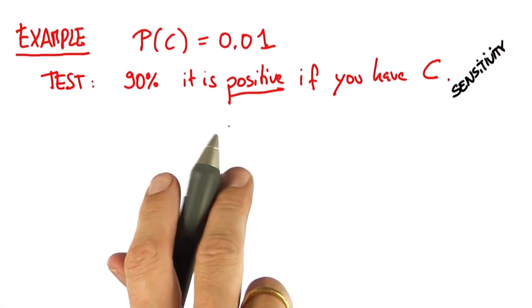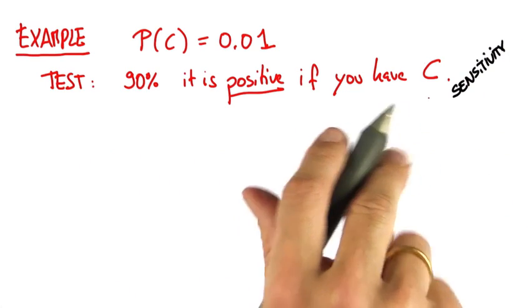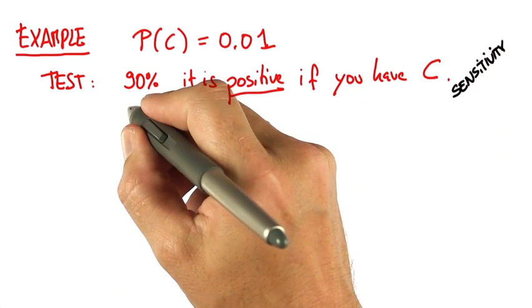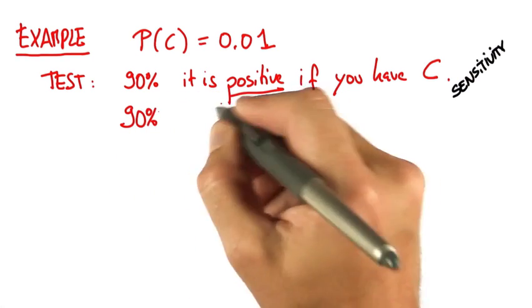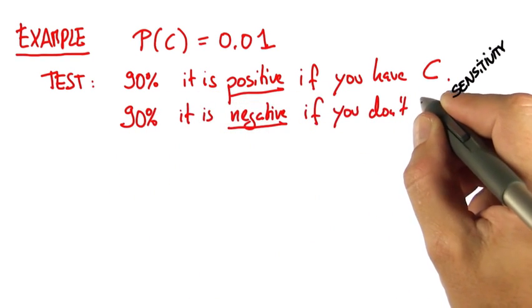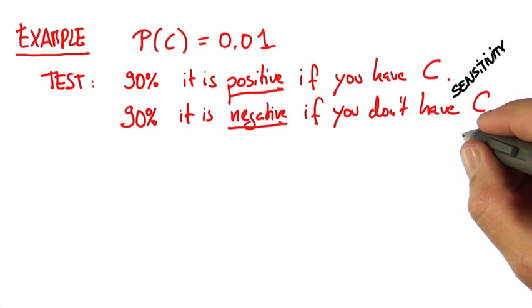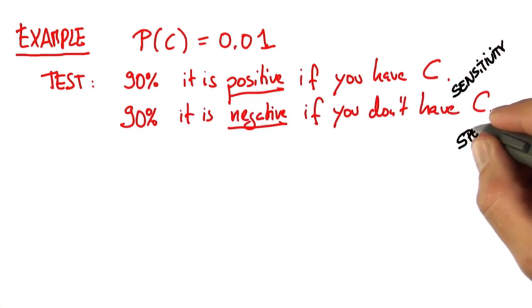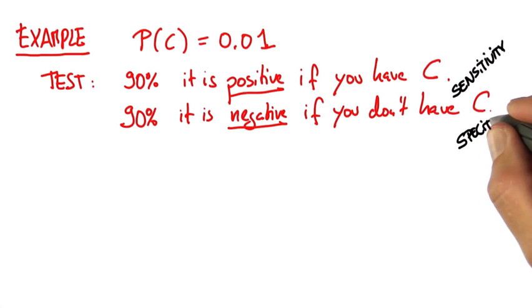But the test sometimes is positive even if you don't have C. So let's say with another 90% chance it is negative if you don't have C. That's usually called the specificity.